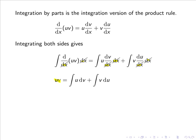We can tidy up the right-hand side to have uv = ∫u dv + ∫v du.